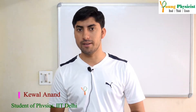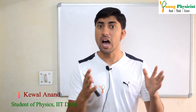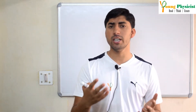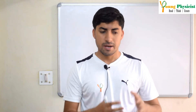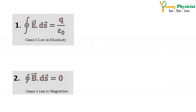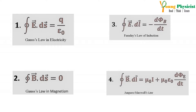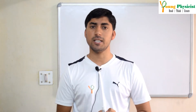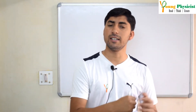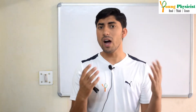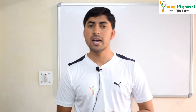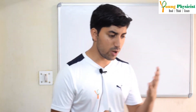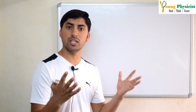Welcome back, my name is Anand and you're watching Young Physicist. Have you ever wondered how James Clark Maxwell concluded that light is an electromagnetic wave? To understand that, we need knowledge of Maxwell's equations. These are a set of four equations that form the foundation of classical electrodynamics and optics. They were not formulated by Maxwell alone — they existed before him — but Maxwell made a very important and significant contribution to one of the equations.